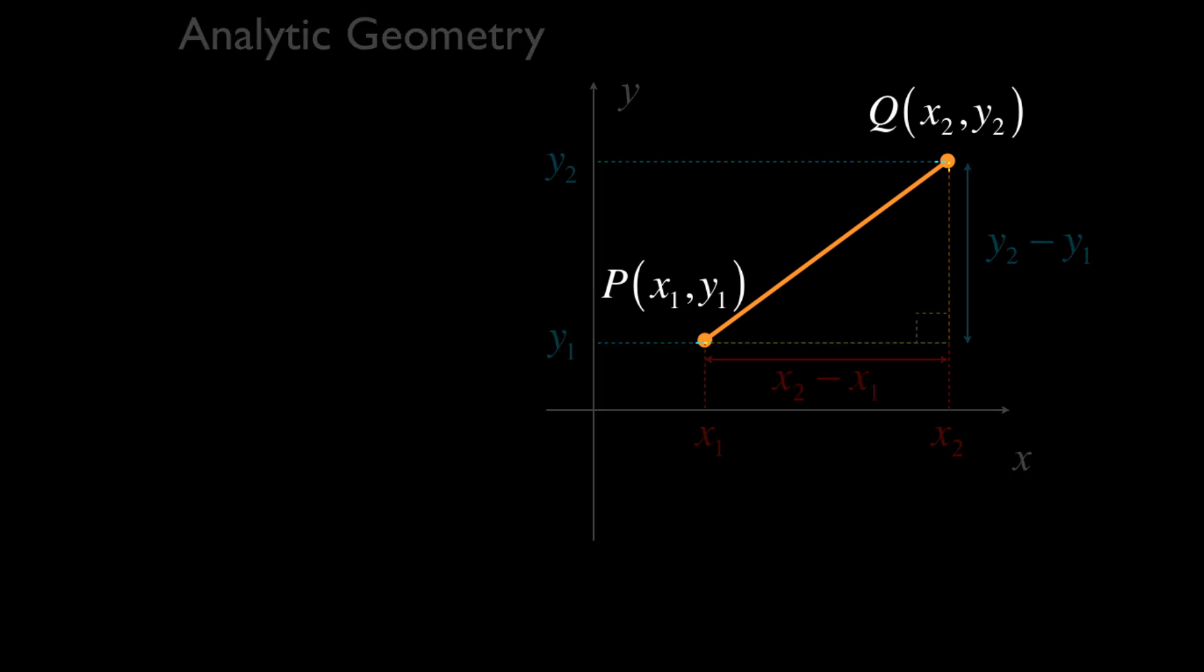What we need to recognize is we have three sides to this triangle. We have the side PQ, which represents the hypotenuse. We have the vertical side, which is y2 subtract y1. And we have the horizontal side, which is x2 subtract x1.